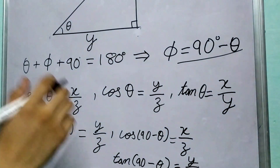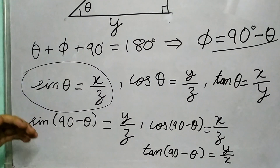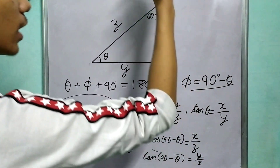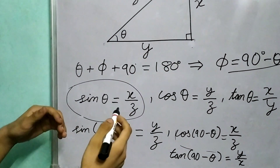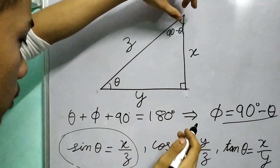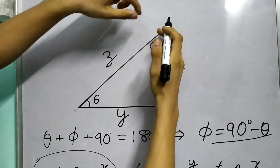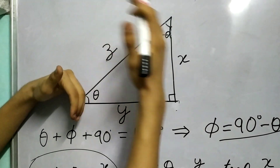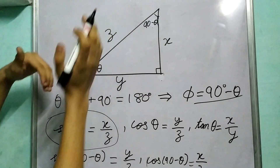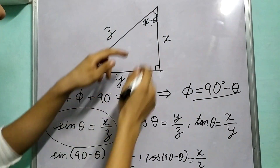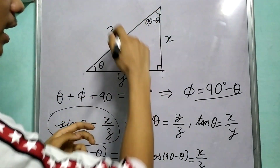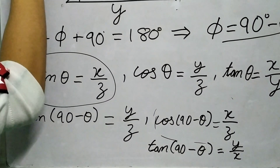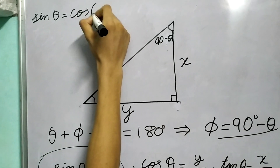Clearly, sin theta, which is x upon z, equals cos of phi, which is cos of (90 minus theta). When we talk in terms of angle theta, x is the perpendicular. But if we talk about (90 minus theta), x becomes the base. So when we take the ratio of perpendicular to hypotenuse for theta we get x upon z, and when we take cos of (90 minus theta) we also get x upon z. Therefore, sin theta equals cos of (90 minus theta).